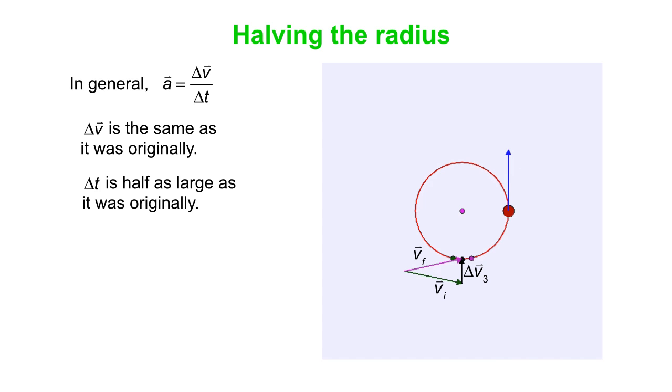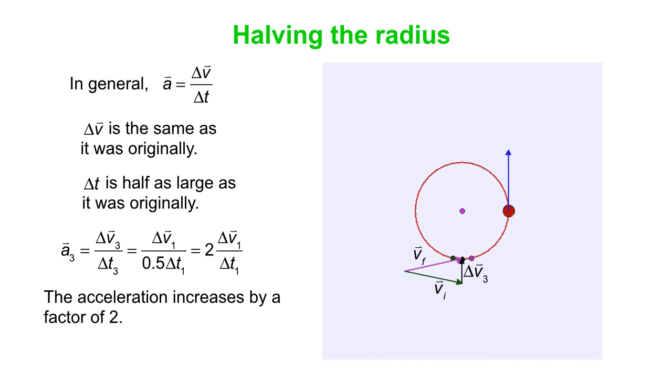But the time interval to go from the green circle to the purple circle is half as large, so our acceleration is now the original delta V over half the time. That's twice the original acceleration. So the acceleration increases by a factor of two. When the radius goes down by a factor of two, that means the acceleration is inversely proportional to R.